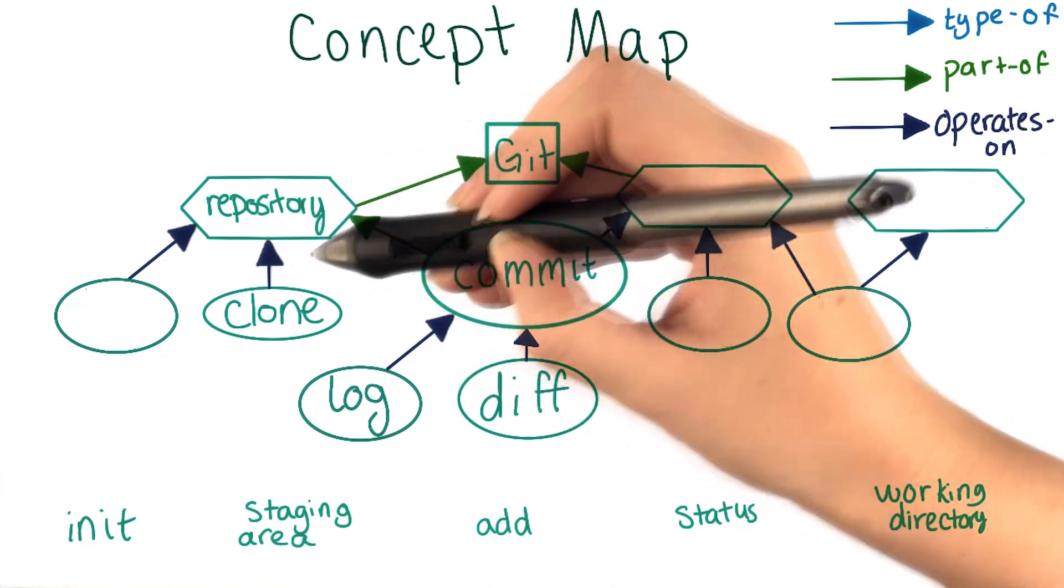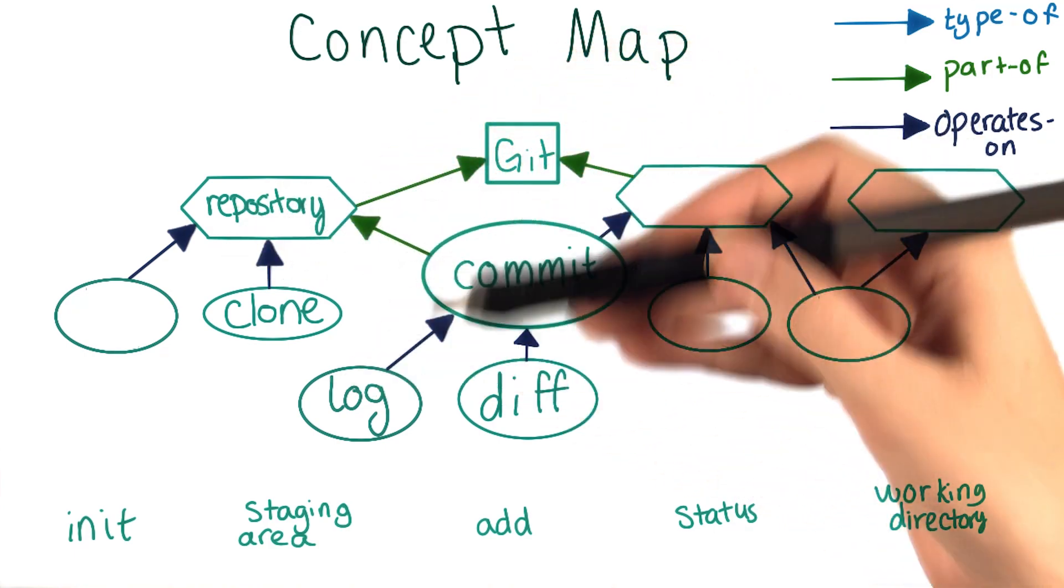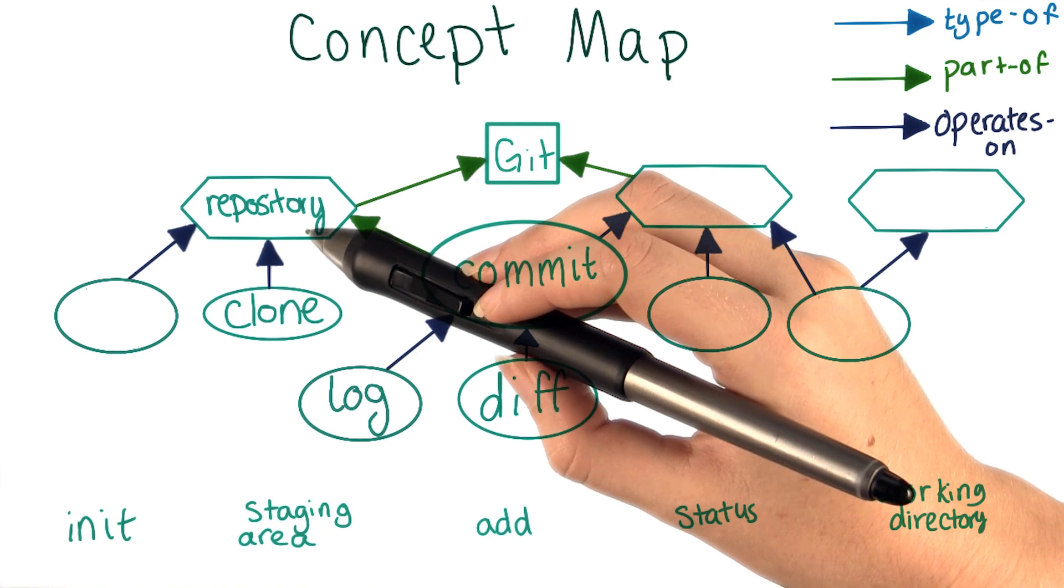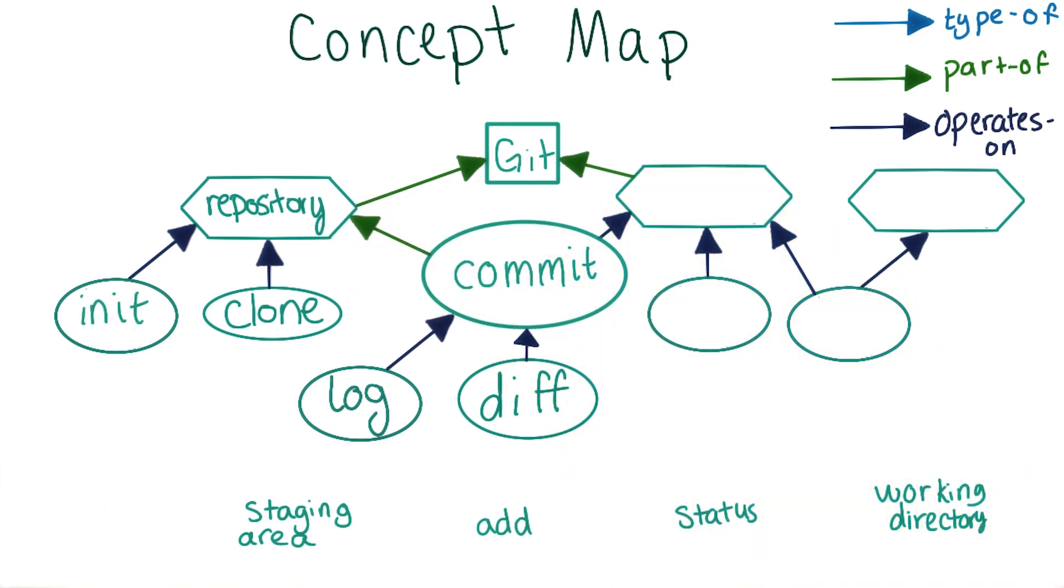We just want to connect it to repository. Since it does something with repository, it creates it. This is an operates on connection. There's only one spot that makes sense for init given this.